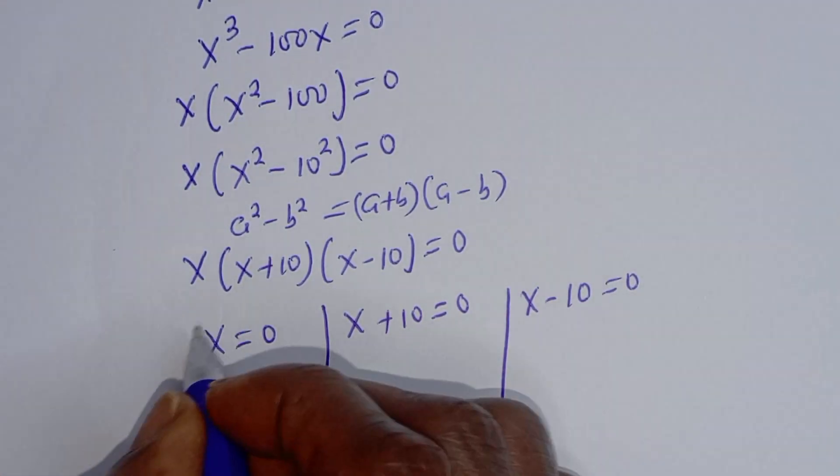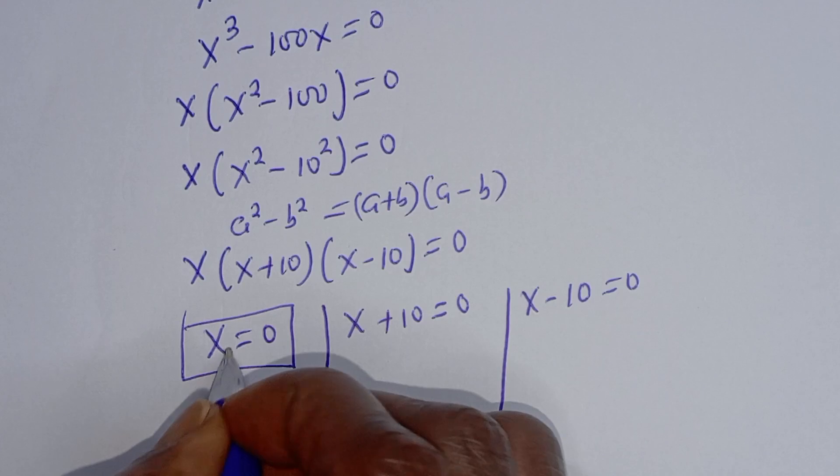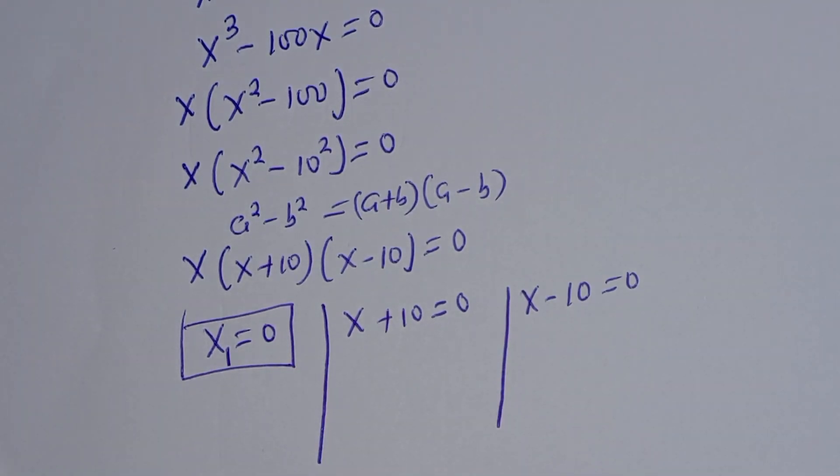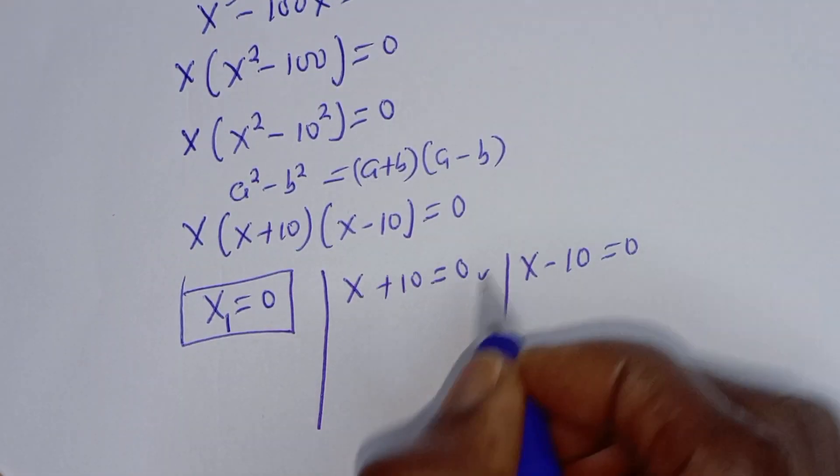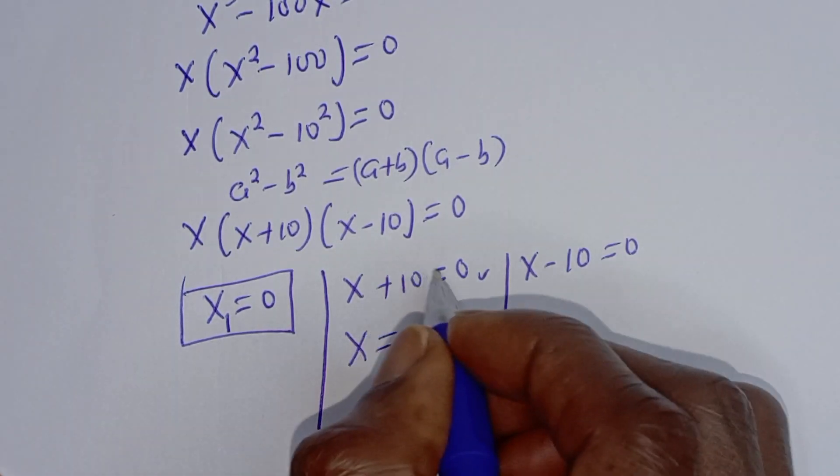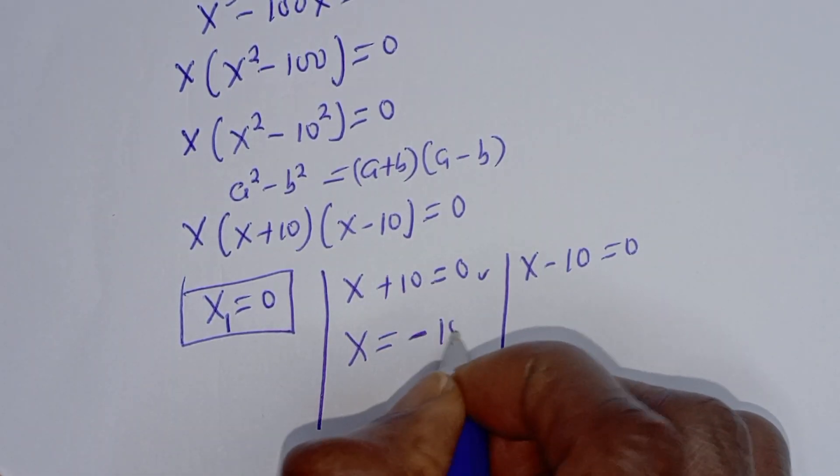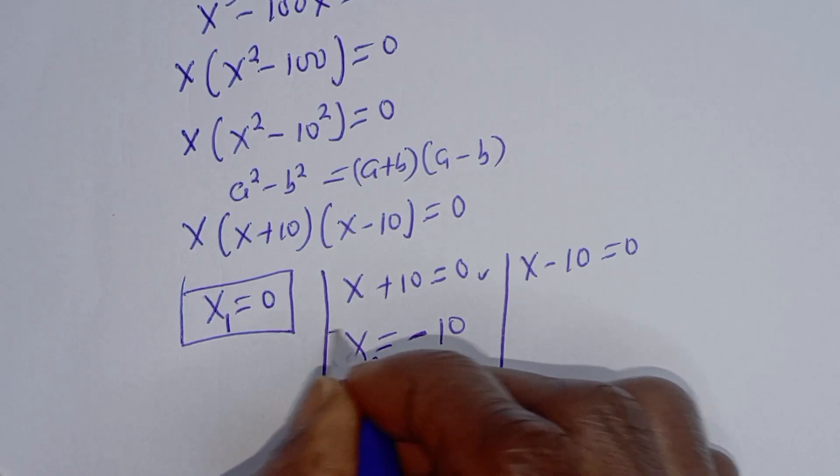From here, x is equal to 0, this is the first value of x, let's call this x1. And from here we have x equal to, if we take 10 to this side, becomes minus 10. Let's call this x2.